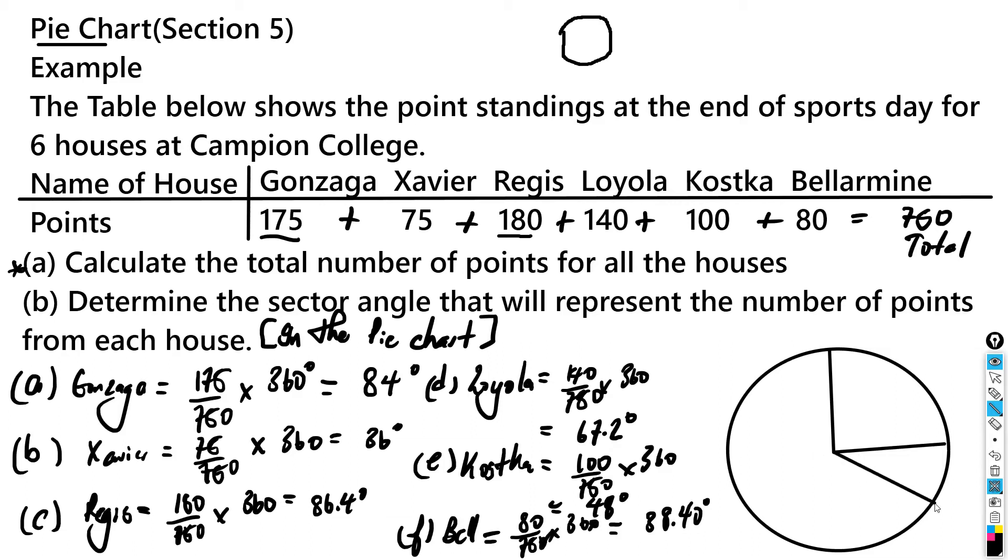Then the next one is 86.4 degrees, and that should be about here, almost 90 degrees but not quite. And the next one is 67.2, which should be about this here.